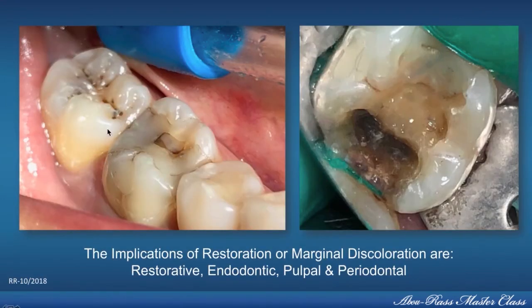Here you see that when you have a restoration with marginal discoloration, this discoloration indicates a possibility of leakage, recurrent caries, and that will have endodontic, restorative, pulpal, and periodontal implications. The dental hygienist must know about these criteria.